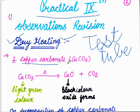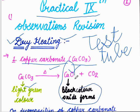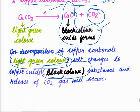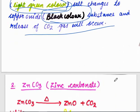The first salt is copper carbonate, CuCO3. It is a light green color substance. On dry heating, it is converted into CuO, which is a black color oxide, along with the release of CO2 gas. On decomposition of copper carbonate, the light green color changes to a black color oxide residue, and CO2 gas is released.